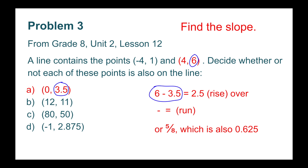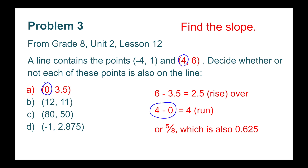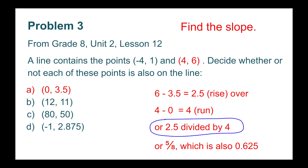6 minus 3.5 equals 2.5. So the rise would be 2.5, and the run would be 4 minus 0. 4 minus 0 equals 4. 2.5 divided by 4, or 2.5 over 4, is equivalent to 5 eighths, which is also equivalent to 0.625. The coordinates for A would be yes — that point would be on the same line.